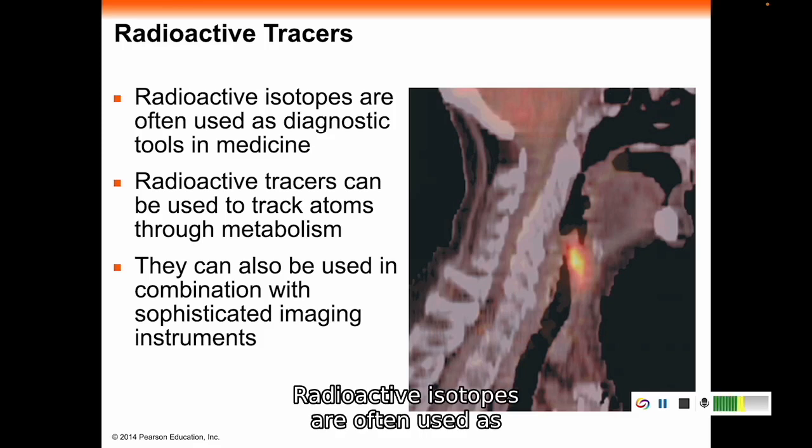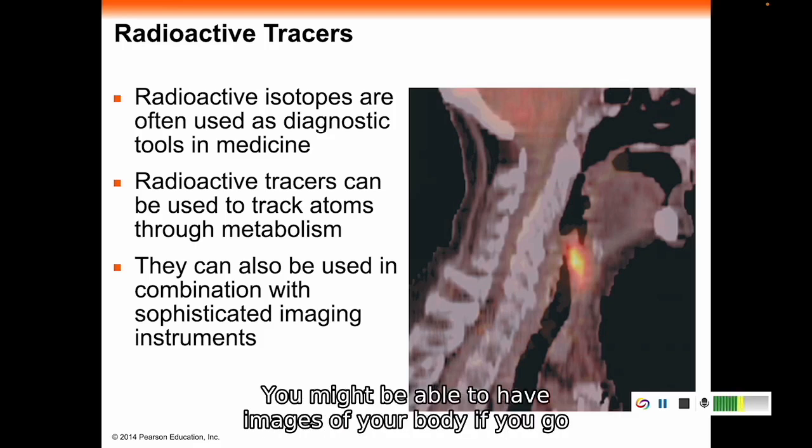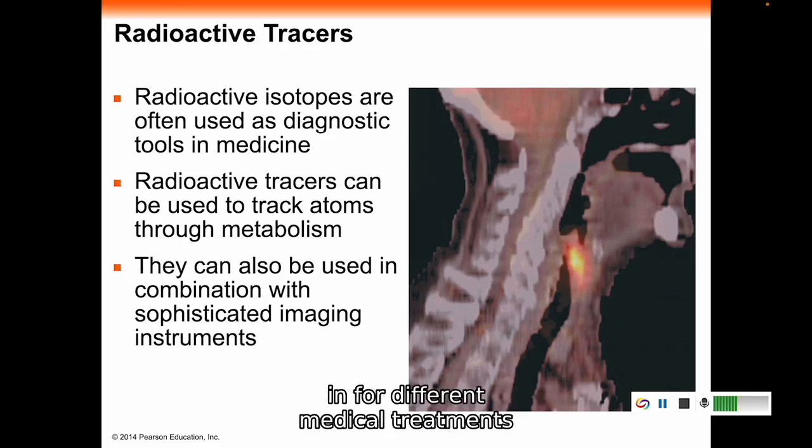Radioactive isotopes are often used as diagnostic tools in medicine. Radioactive tracers can be used to track atoms through metabolism and with sophisticated imaging instruments. You might be able to have images of your body if you go in for different medical treatments based on radioactive tracers.